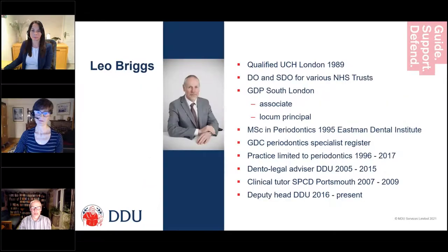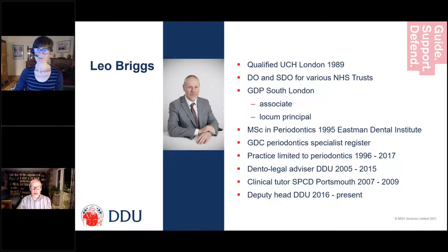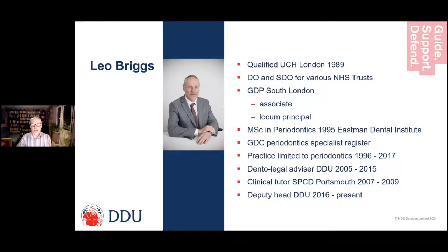Just a little bit about me. I'm Leo Briggs, deputy head of the DDU. I qualified as a dentist in 1989. I've worked in general dental practice and community. I have a master's degree in perio and I'm on the specialist list for periodontics. I started at the DDU in 2005, initially part-time, went full-time in 2009, and became deputy head in 2016.